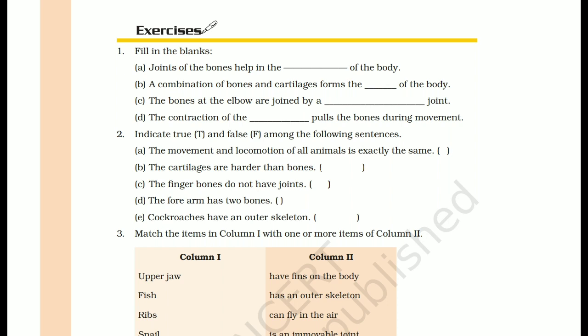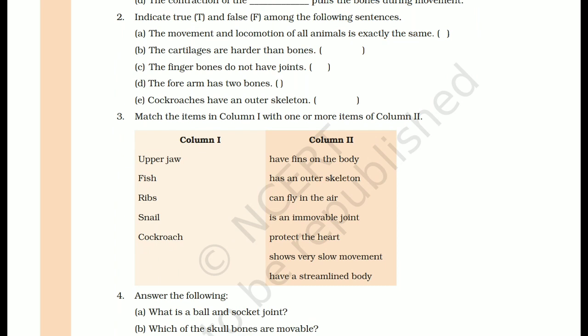Question 3: Match the items in Column 1 with one or more items from Column 2. The upper part of the skull is an immovable joint — a fixed joint, as we studied in the chapter.